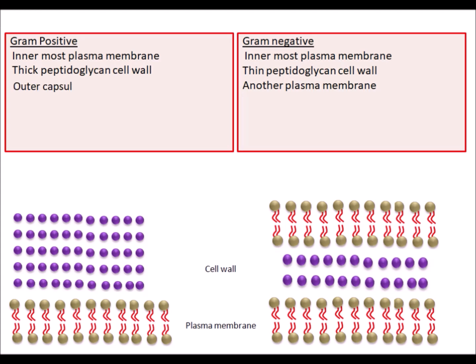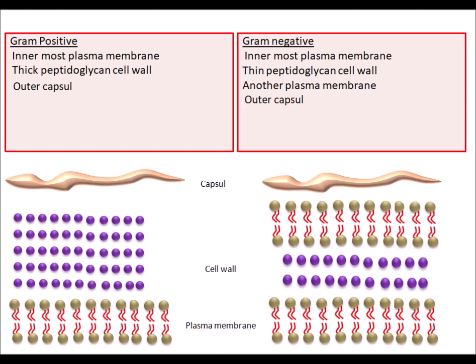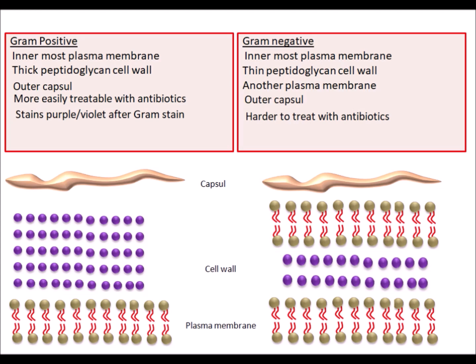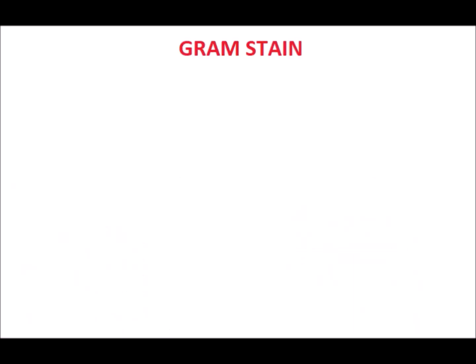One important thing is we can treat Gram-positive bacteria more easily because it has a single layer of plasma membrane. But in the case of Gram-negative bacteria, it has double layers of plasma membrane, making it more difficult to treat with antibiotics. When we talk about Gram staining, Gram-positive bacteria appear purple or violet and Gram-negative bacteria appear red or pink after Gram staining.